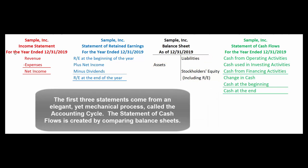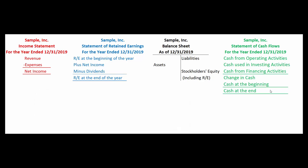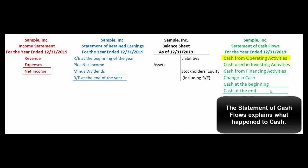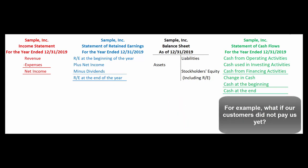The first three of the four statements come from the accounting cycle; the fourth we have to create in a separate system. It's called the statement of cash flows, and it explains what happened to our cash balance over the course of the year. It breaks down into operating, investing, and financing activities. You might wonder why cash doesn't just go up by net income — but suppose none of our customers paid us. We may have made money but didn't get any cash. Those are the kinds of adjustments the statement of cash flows makes.